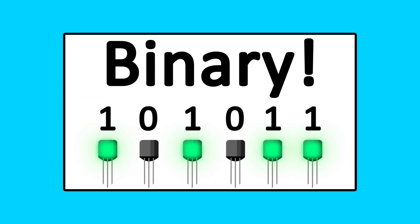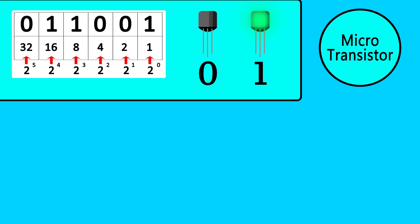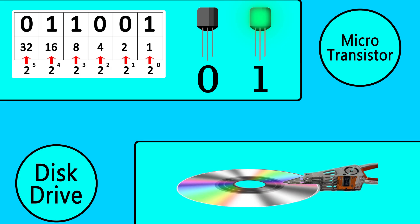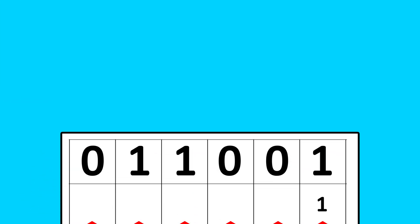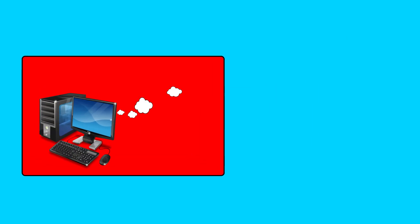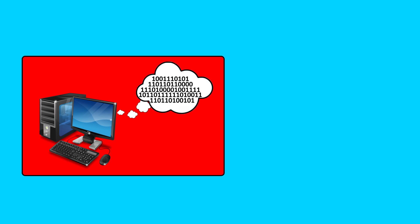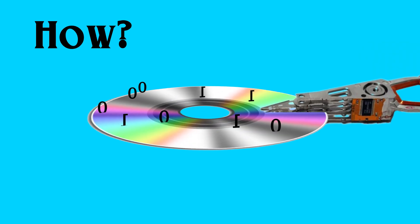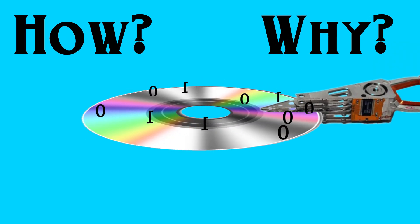In my recent video on binary, I explained how two-state transistors are used to represent binary numbers composing data. In this video, I will explain a different way that binary data is stored, which is on a spinning disk drive. If you haven't seen my video on binary, or don't know exactly how binary works, it might help to check that video out after this one. So we know that computer data is all stored in binary — something that can have two states, interpreted as a 1 or a 0. How does a spinning disk achieve this, and what advantages does it have over the microtransistor method?